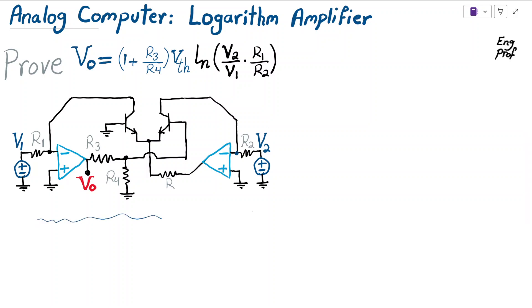The analog computer shown here effectively computes the natural logarithm of the ratio of voltage V2 over V1, with a scale factor R1 over R2, where R2 and R1 are these two resistors.